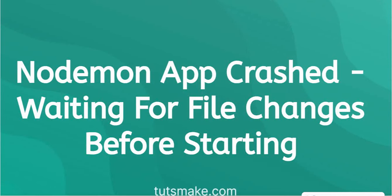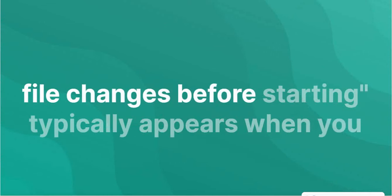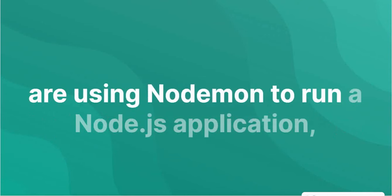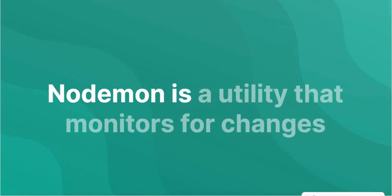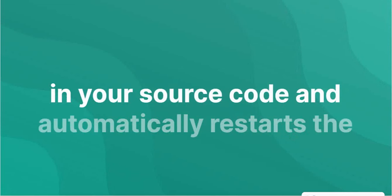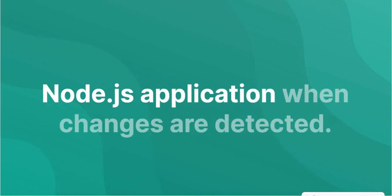Before starting: the 'Nodemon app crashed, waiting for file changes before starting' error typically appears when you are using Nodemon to run a Node.js application and the application crashes for some reason. Nodemon is a utility that monitors for changes in your source code and automatically restarts the Node.js application when changes are detected.